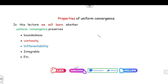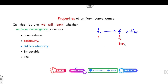In this lecture we will see: if the sequence fn converges to f uniformly, and fn satisfies a certain property, does f also satisfy the same property? Specifically, whether uniform convergence preserves boundedness, continuity, differentiability, and so on.